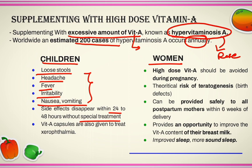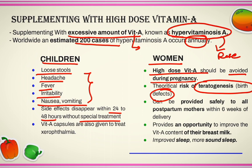In women, hypervitaminosis A can also be manifested, and a high dose of vitamin A is strictly avoided during pregnancy as it can cause teratogenic effects on the newborn baby — meaning there may be birth defects in the neonate.